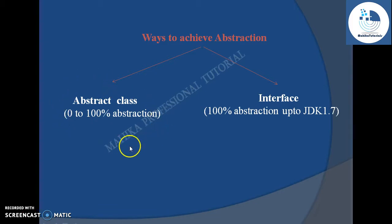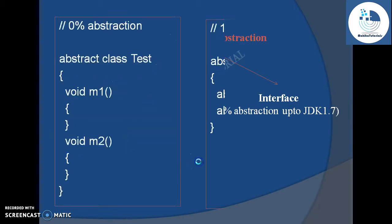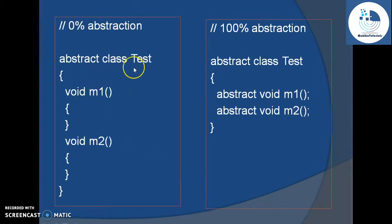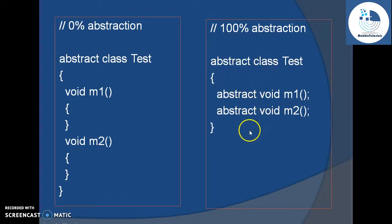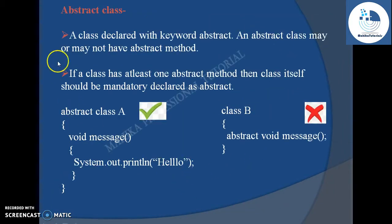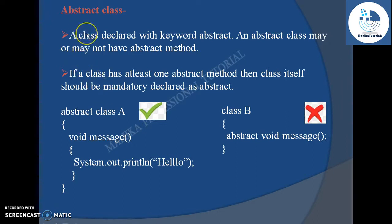What is this degree of abstraction? Suppose if I create an abstract class but I do not give any abstract method inside this class, then this will be an example of zero percent abstraction. But suppose if I create an abstract class where I give all the methods as abstract, then that would be an example of one hundred percent abstraction. Now we will see a few important points about an abstract class.